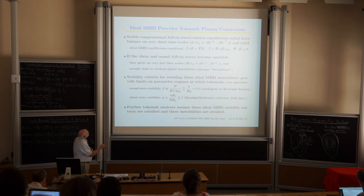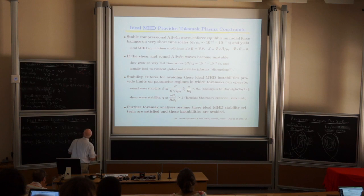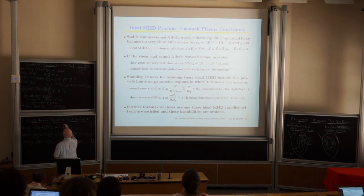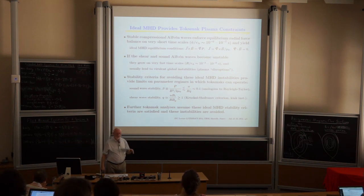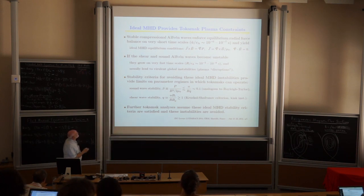On compressional Alfvén wave timescales, we insist upon ideal MHD equilibrium. Looking at the ideal MHD force balance in equilibrium, inertia vanishes and we get J cross B = grad P to lowest order — we don't worry about viscosity at this timescale. So ideal MHD equilibrium is described by J cross B = grad P, J = curl B, and div B = 0.